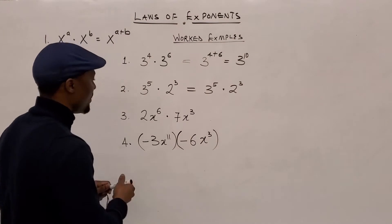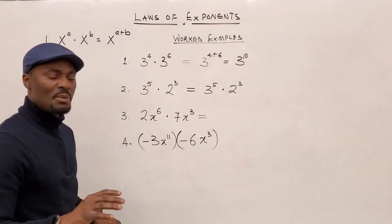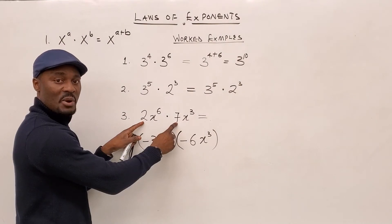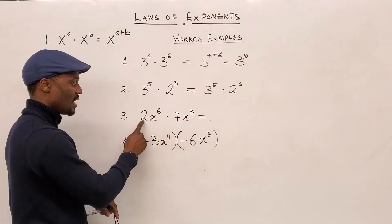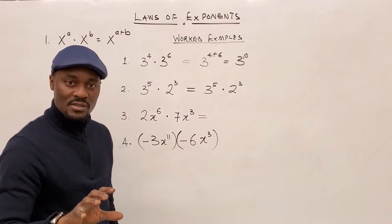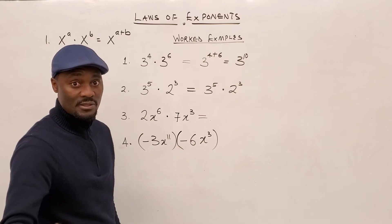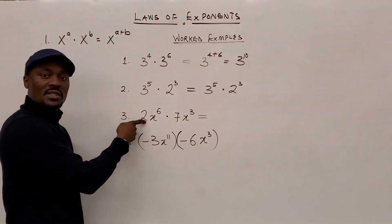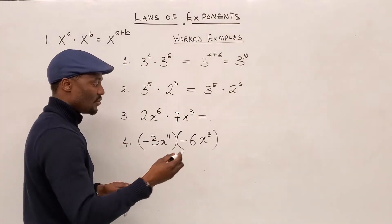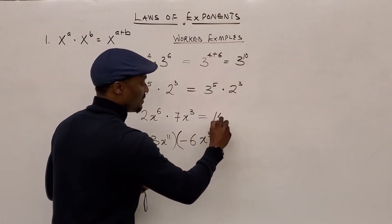Number 3 is different — you don't just have exponents, you also have numbers. However, these are not numbers written as exponents; they're just numbers. So when you see questions like this, look for the coefficients. The coefficients are the numbers that are multiplying the variables or the letters or the symbols. In this case, 2 is just a coefficient and 7 is just a coefficient. You can multiply 2 by 7 and get 14. Remember to do that — don't apply the law to the numbers.